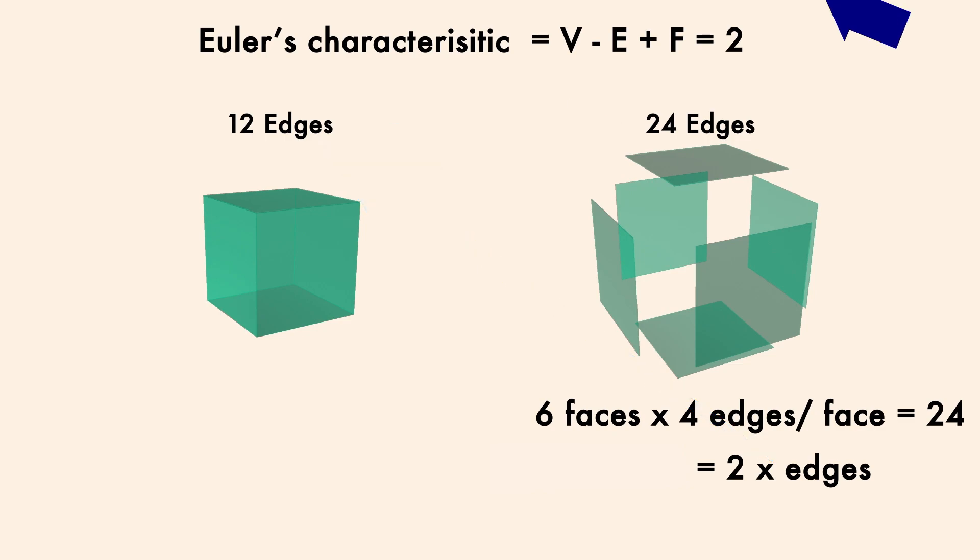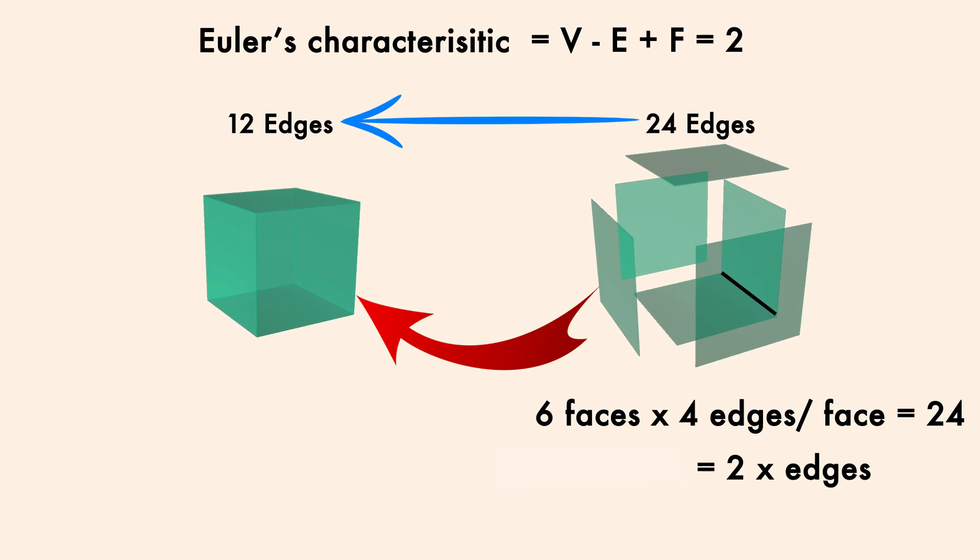And that's because, for example, right here there are 2 edges. But when we bring them together, it becomes 1, which is half of 2. And since this happens everywhere, when we go back to the connected cube, it will have the total number of edges.